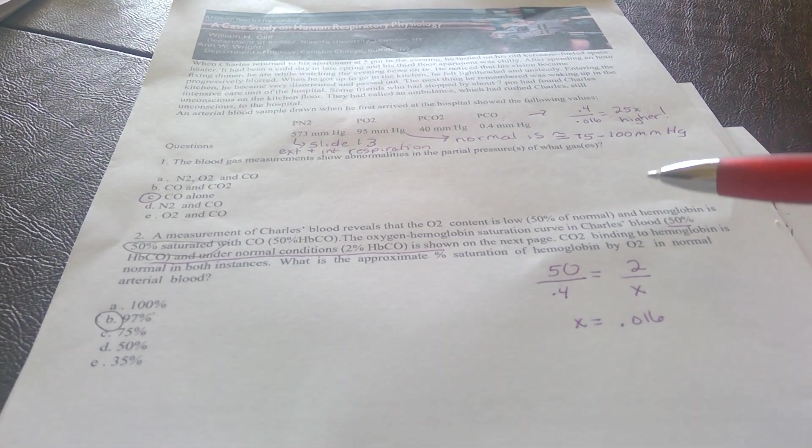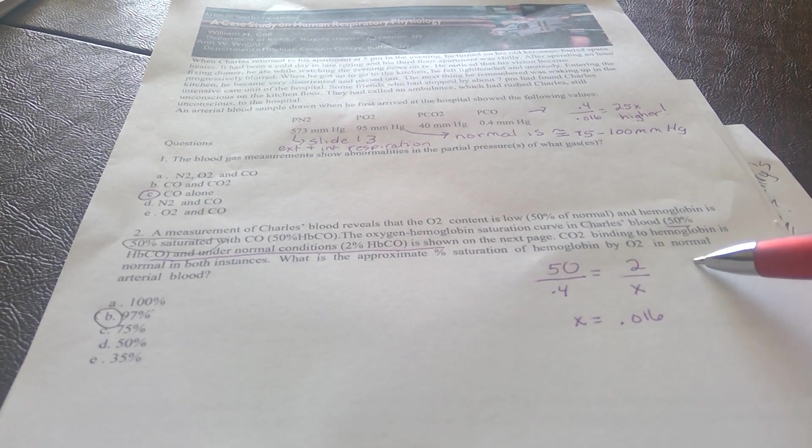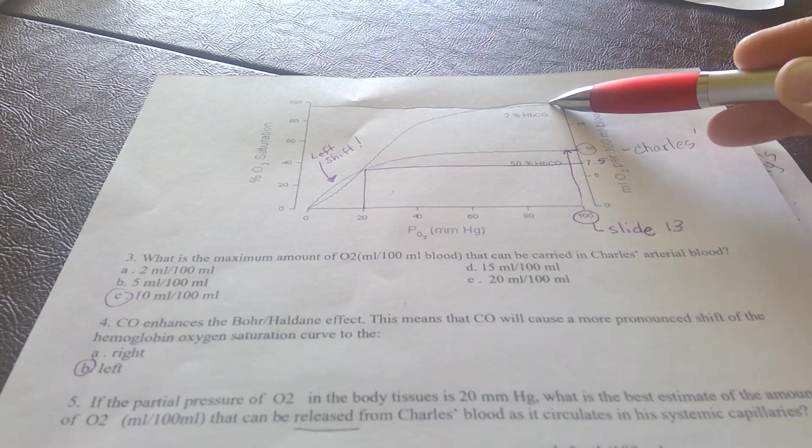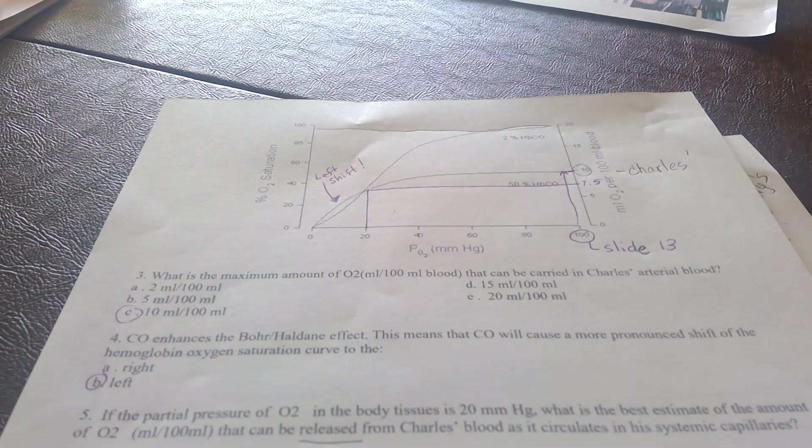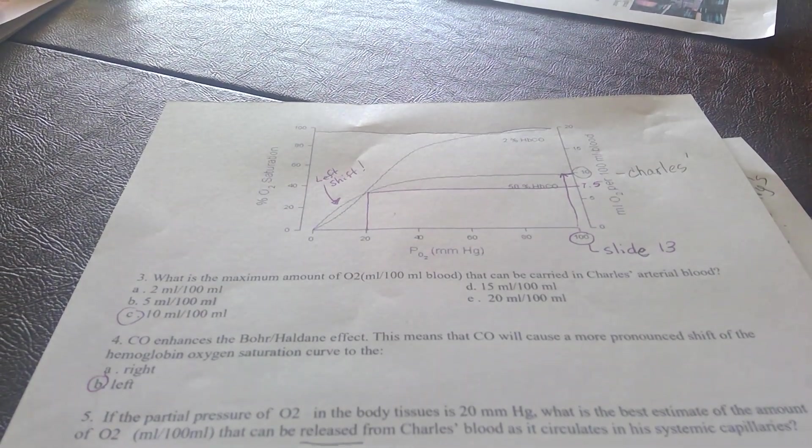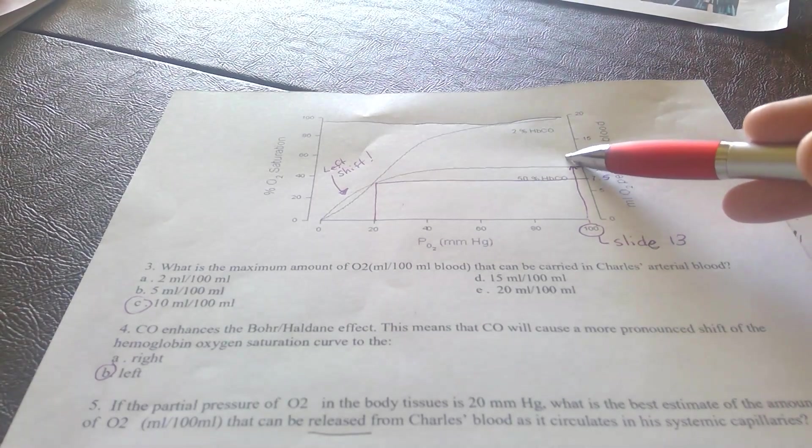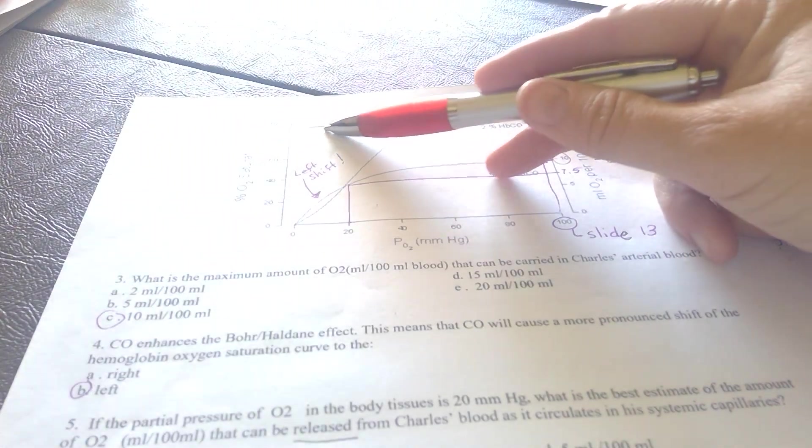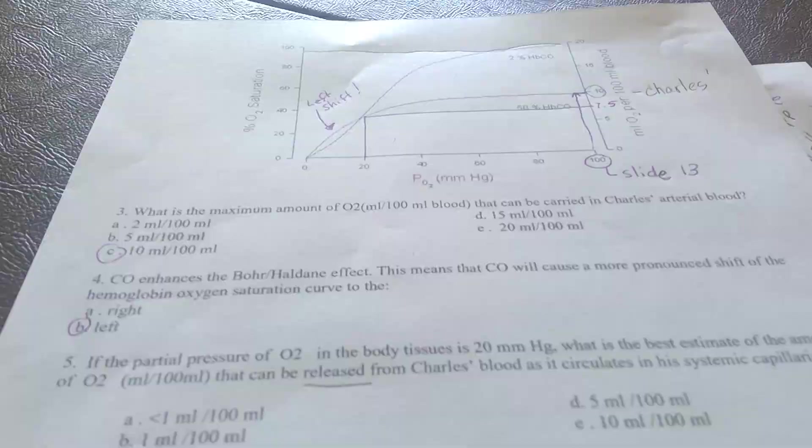The question says, under normal circumstances, what is the approximate percent saturation of hemoglobin by oxygen in normal arterial blood? That means we use this curve. If I take 95 to 100 millimeters of mercury and draw it up, vertical line up until I hit the normal curve, and then draw a horizontal line over, I'm going to reach about 97-ish percent saturation.